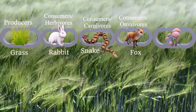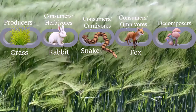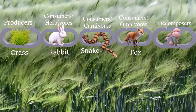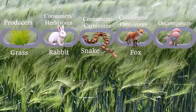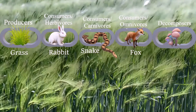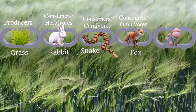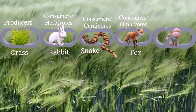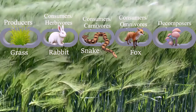Finally, we have our decomposers. Examples of decomposers are bacteria, fungi, and worms. When a plant or animal dies, the decomposer breaks it down into the soil so new plants can use their energy. So energy just keeps getting reused.